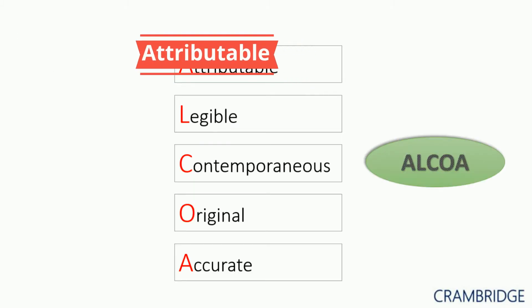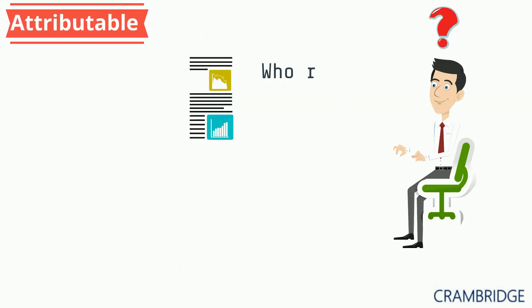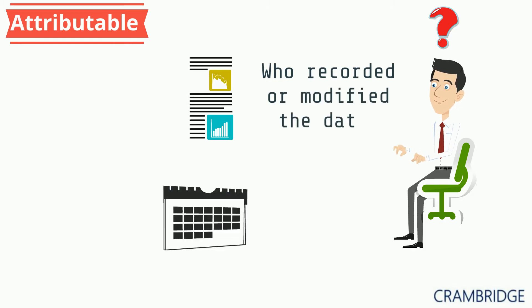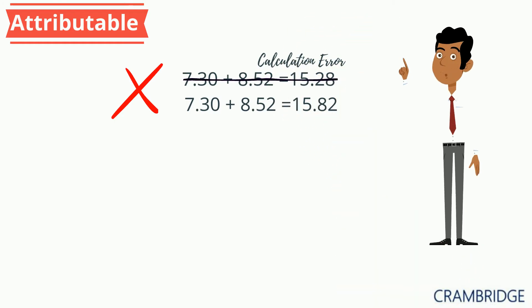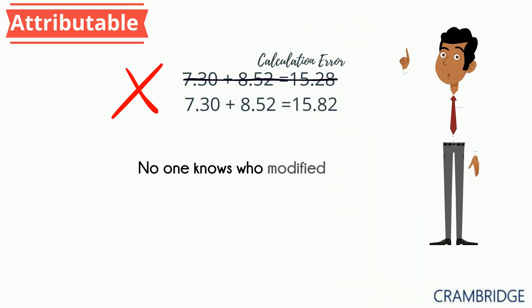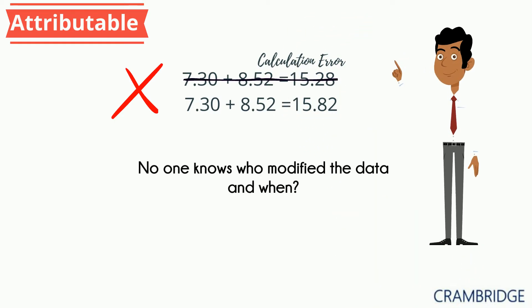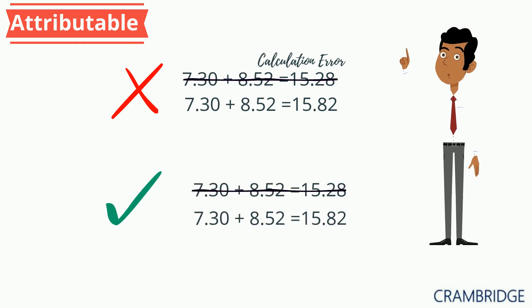The A in ALCOA is attributable — who recorded or modified the data, and when? Are you wondering what is wrong with this? Data has been modified, but it's not attributable. No one knows who made this change and when.